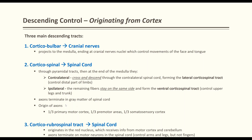The axons of the corticospinal tract have three origins in equal thirds: one-third originate from the primary motor cortex, one-third from the premotor area, and one-third from the somatosensory cortex. So the corticospinal tract is not a pure motor tract — 33% of its fibers originate from the somatosensory cortex.